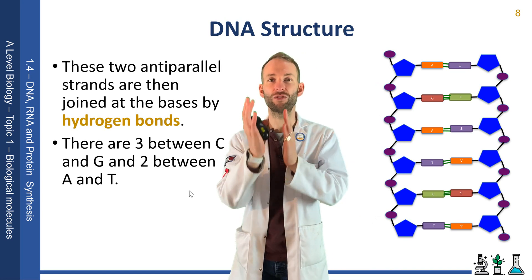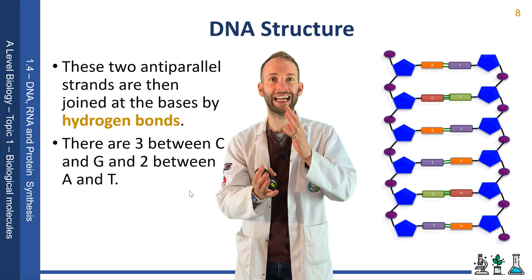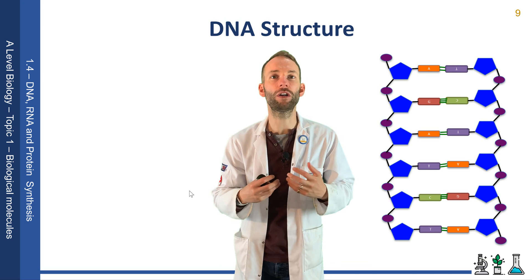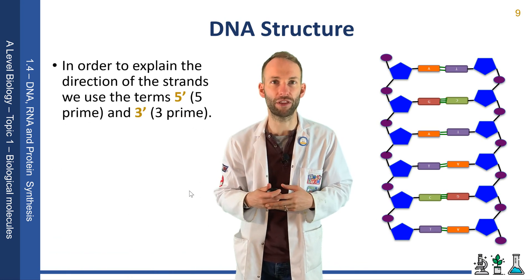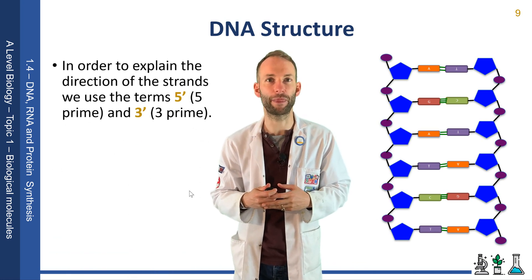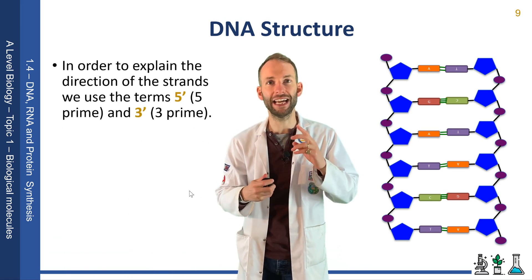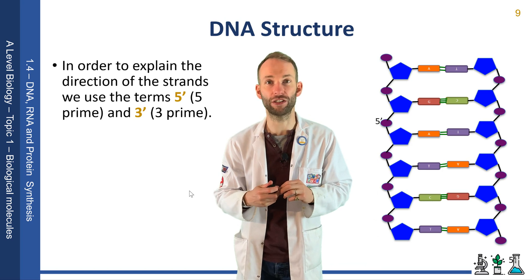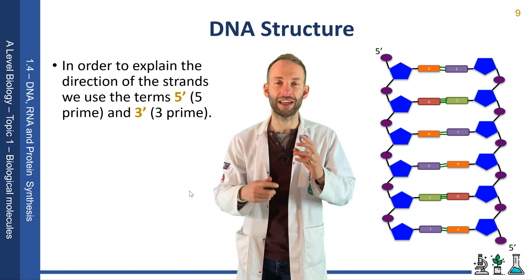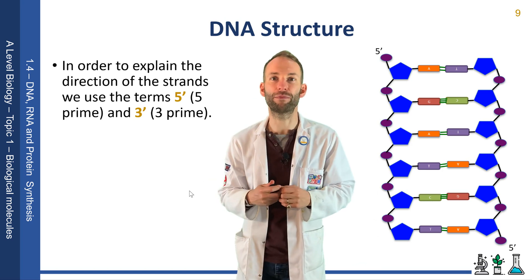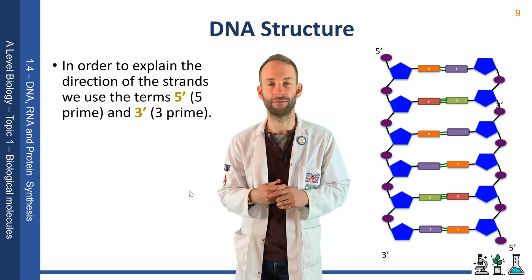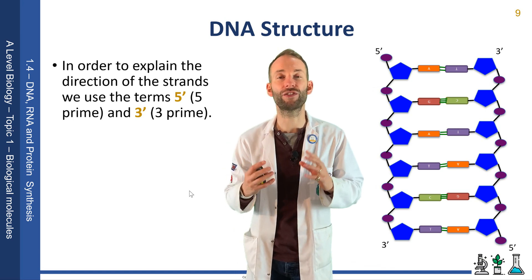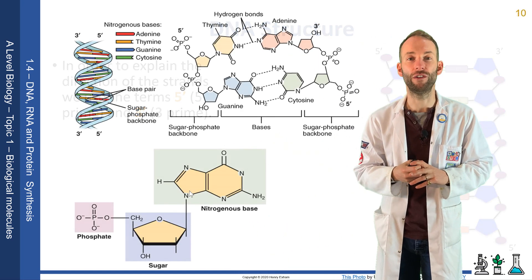In order to describe the direction of strands, we talk about the terms five prime to three prime. The end with the spare phosphate sticking out of it is our five prime end, and the other end is the three prime end. And that is essentially the structure of DNA.